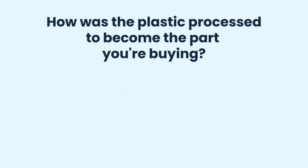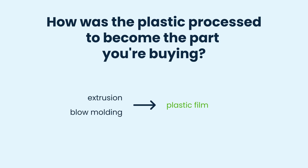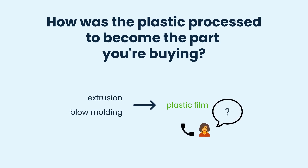If you're buying processed plastics, find out how they were processed to become the component you're purchasing. This may be challenging as there can be multiple processing methods for the same component. For example, plastic film can be produced through extrusion or blow molding, and if you're not in contact with a supplier, it might be hard to find out.